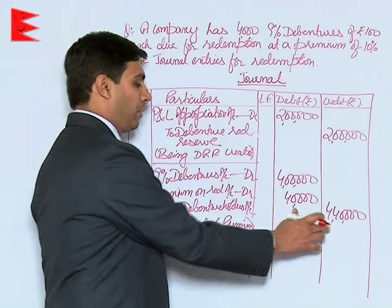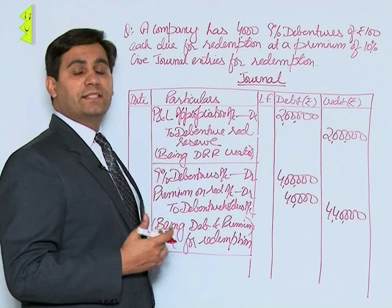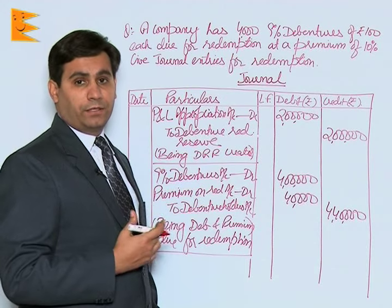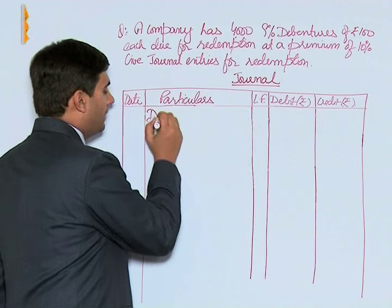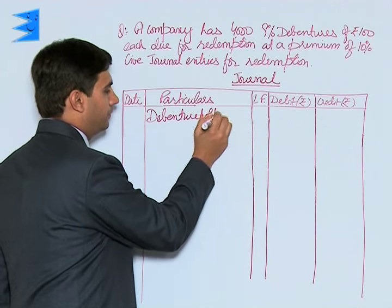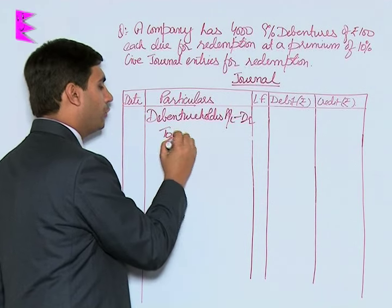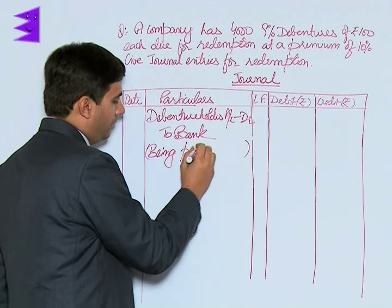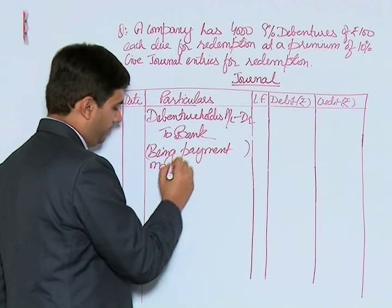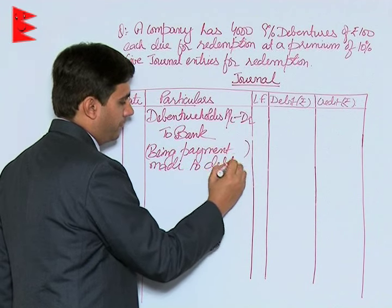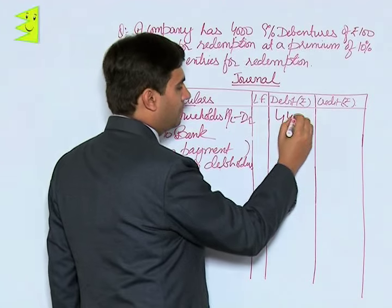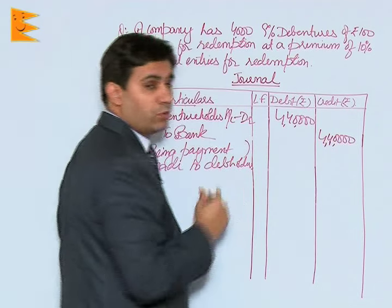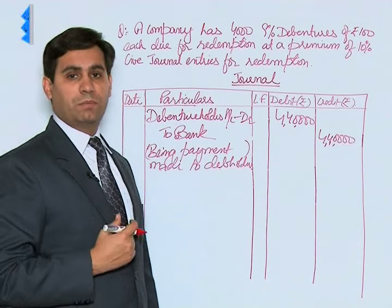The total amount of four lakh forty thousand is to be paid to debenture holders. The next entry is for payment of this amount: Debenture Holders Account debited to Bank — four lakh forty thousand. Four lakh is on account of the face value of debentures and forty thousand on account of premium on redemption.